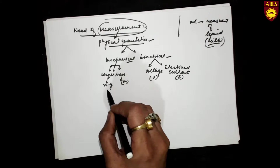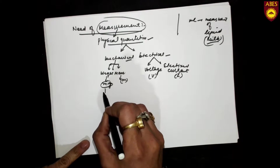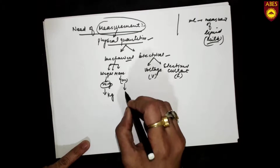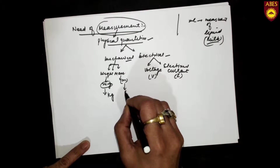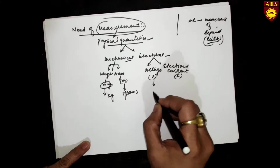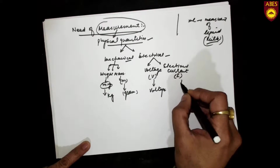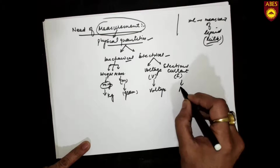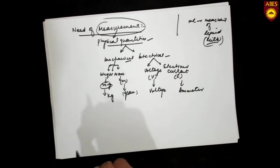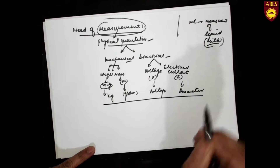Weight is measured in kilograms, mass is measured in grams, voltage is measured in volts, and current is measured in amperes. These are the quantities we are going to measure.